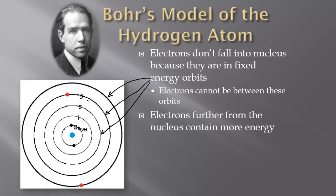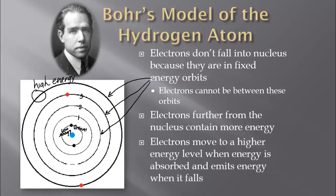Electrons have to be at those specific energy levels. Electrons further from the nucleus contain more energy — out here you have high energy, and close in you have low energy. The further away you get from the nucleus, the more energy you contain. Electrons will move to a higher energy level when energy is absorbed, and they will emit energy when they fall back down. In order for an electron to move up, energy must come in and be absorbed; when it falls back down, it emits energy. And that is where we leave off with this model of the atom.